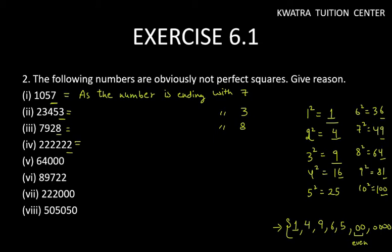Next, this is ending with 2. Again, 2 will never end with our perfect squares, either with 1, or with 4, or with 9, or with 6, or with 5.